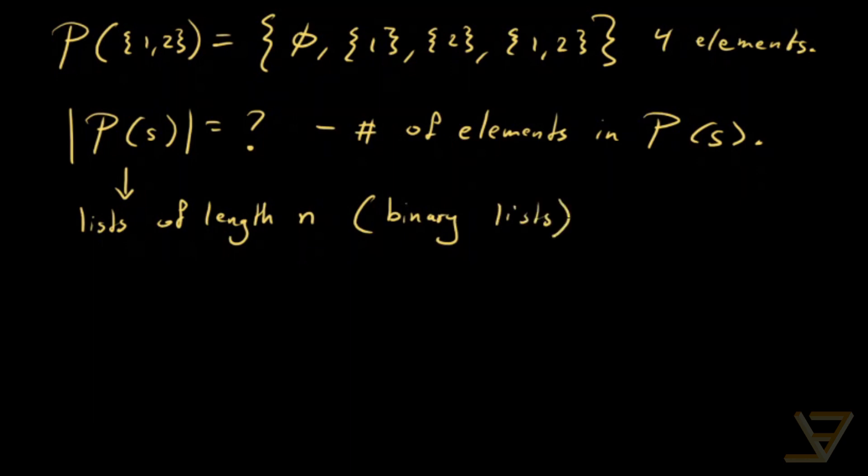By binary lists I mean that each element is going to be 0 or 1. So there's going to be 1, 2, 3, all the way through to n elements in these lists. And they're going to correspond to a1, a2, a3, all the way through to an. These are the elements of S.